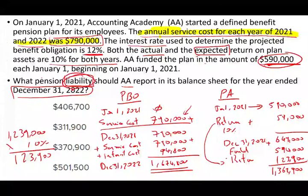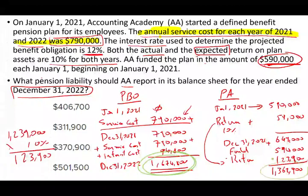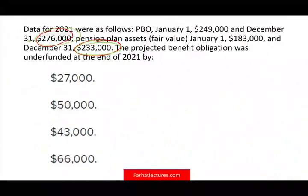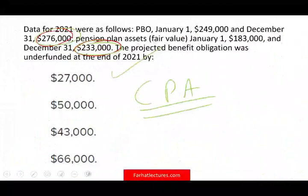We have a liability because the PBO exceeds our plan assets. The difference between the PBO and the plan assets is the liability. This question requires more computation than the first. On the CPA exam, if I had to guess, they are more likely to give you the simpler version — but if you understand this question, the simpler one will be easy. The question might tell you whether it's a liability or an asset, or might not, so be careful.